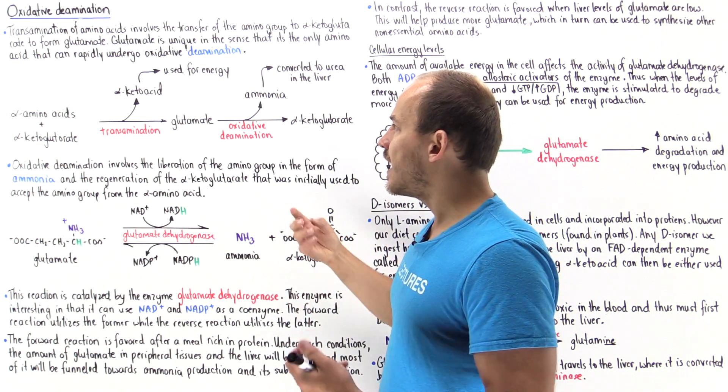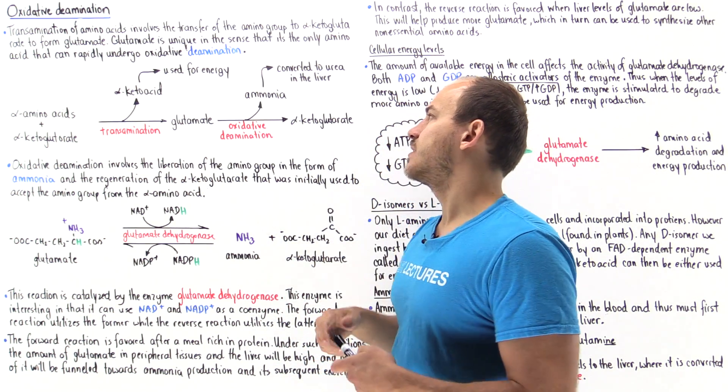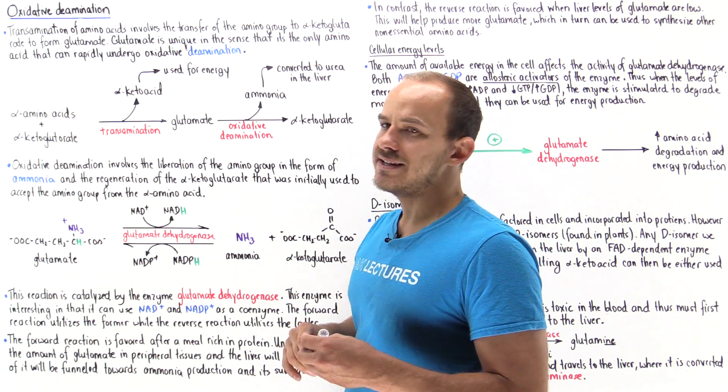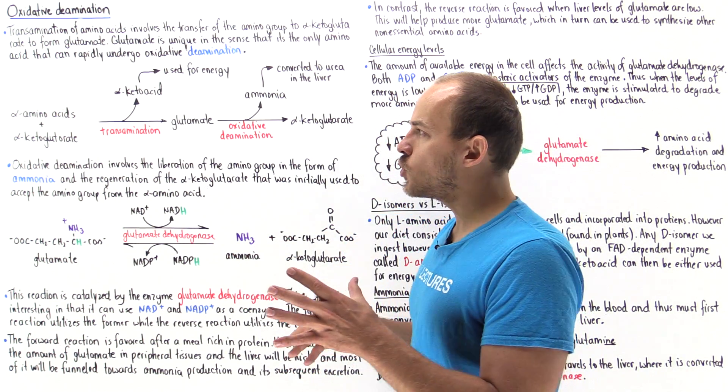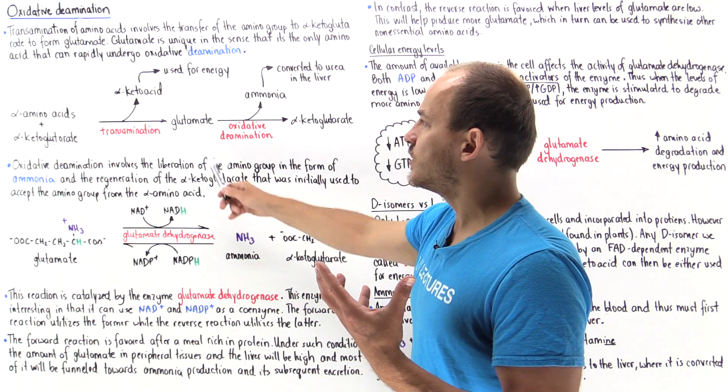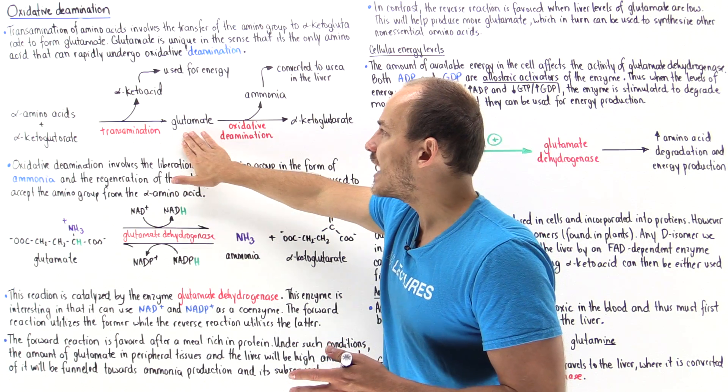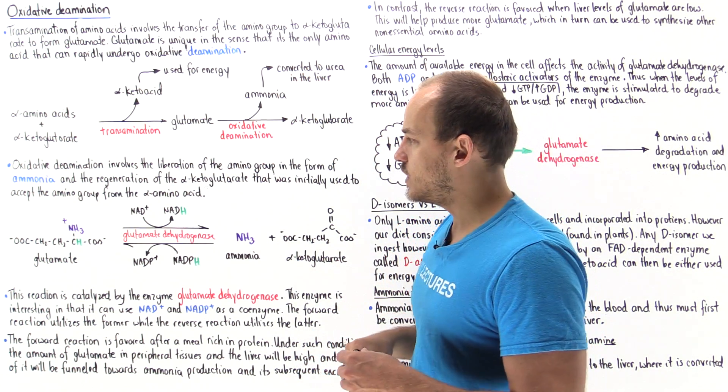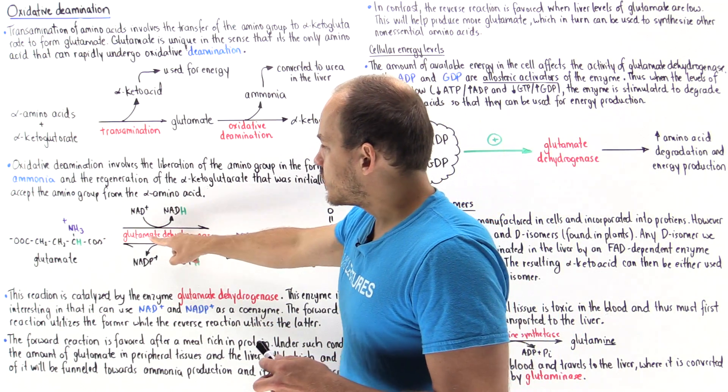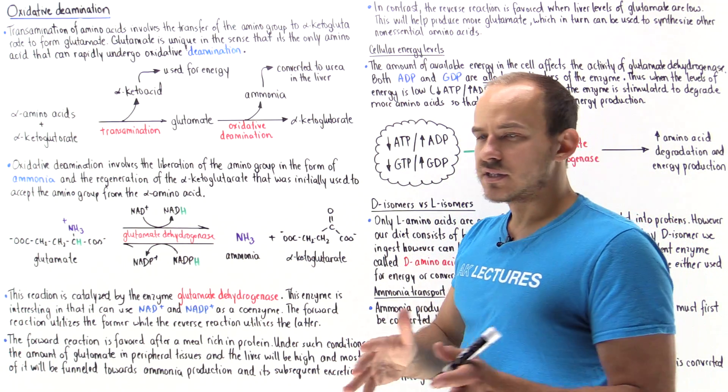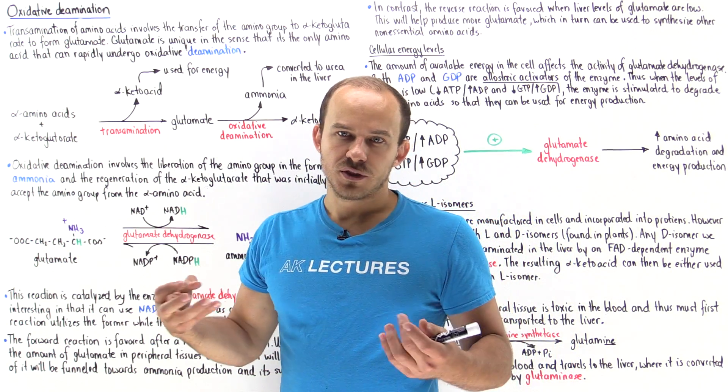Our cells have an enzyme that can catalyze this oxidative deamination step and this enzyme is known as glutamate dehydrogenase. The reason we want to always convert these alpha amino acids into glutamate is because we have an enzyme that can quickly convert glutamate into alpha-ketoglutarate and ammonia. This glutamate dehydrogenase is found throughout the body but predominantly we find it in the liver and within our kidneys.